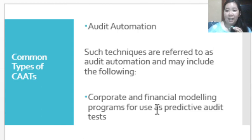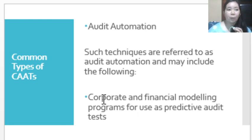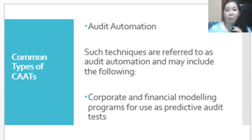Audit automation also includes corporate and financial modeling programs for use in predictive audit tests. This is how audit automation helps the auditor perform audit procedures and understand how a CIS environment will be audited. Those are the different common types of CAATs that the auditor can use to aid in auditing a CIS environment.